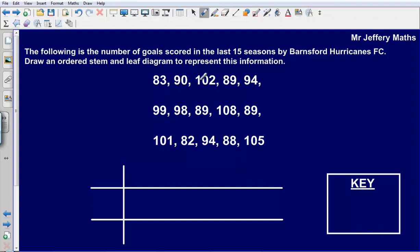So we've got 83, 90, 102 and so on. Now all that we are doing with stem and leaf diagrams is we are breaking down the numbers. So generally we are breaking down the numbers into tens and units.